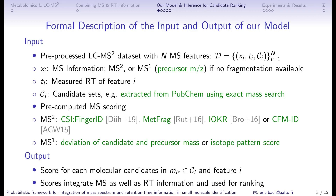Let's look at a more formal description of the input and output of our model. We assume you provide a pre-processed LC-MS2 dataset with n features, consisting of a set of triplets where Xi denotes the MS information — either MS2 or, if not available, MS1 such as the precursor mass. Ti denotes the measured retention time, and calligraphic Ci is the candidate set, for example the set of potential molecular structures extracted from PubChem using exact mass search, or a more application-specific smaller candidate set.